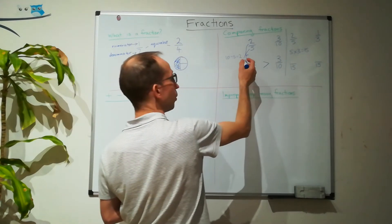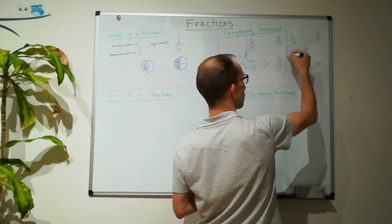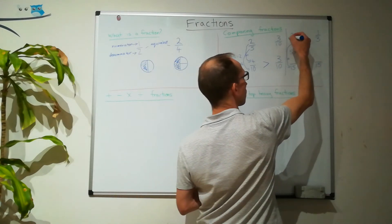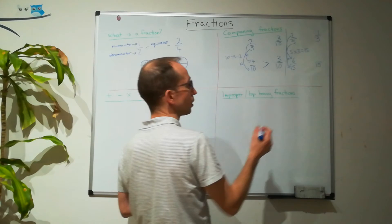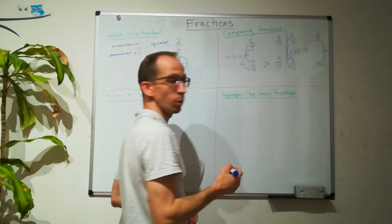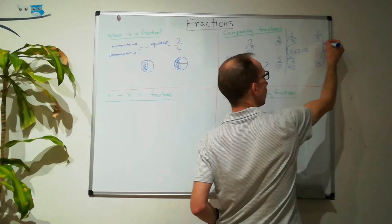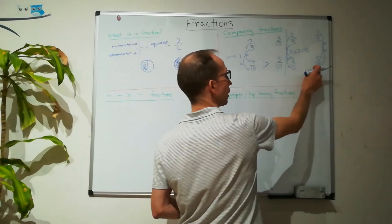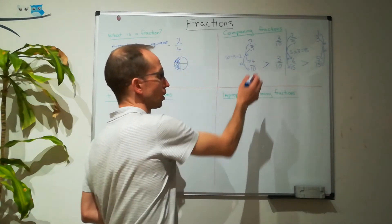We're going to rewrite these two fractions with a denominator of fifteen. Using our rule, to get from five to fifteen we multiply by three, so two multiplied by three is six. For one-third, to get from three to fifteen we multiply by five, so one times five is five. Now we can do our comparison: which is bigger, six-fifteenths or five-fifteenths? Six-fifteenths — so we write the greater than sign that way.